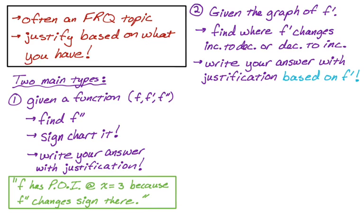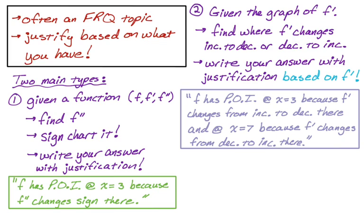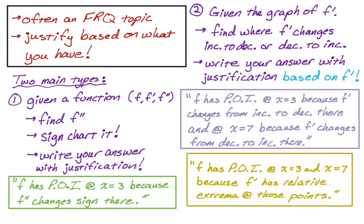Your justification might look something like this: f has a point of inflection at x equals three because f prime changes from increasing to decreasing there, and at x equals seven because f prime changes from decreasing to increasing there. That's a perfectly good answer. Alternatively, you might write: f has points of inflection at x equals three and x equals seven because f prime has relative extrema at those points. That's also a perfectly good way of justifying a point of inflection.